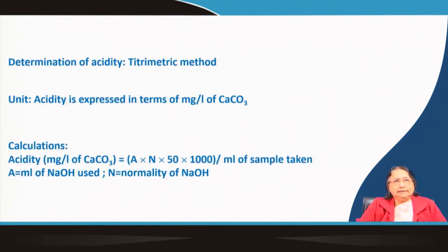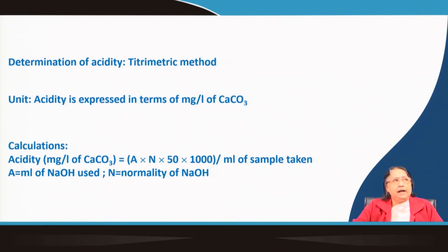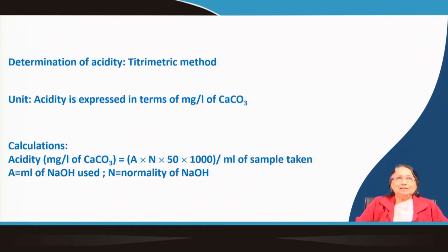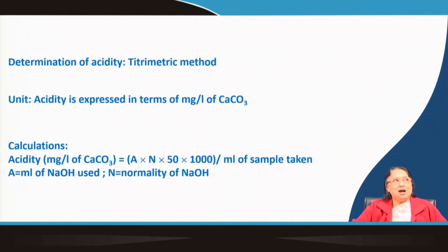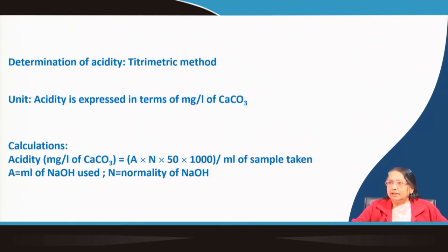For the determination of acidity we use a titrimetric method in the laboratory, using a burette and a proper choice of indicator. The knowledge of indicator selection from the previous lecture is applicable here. You have a sample containing some acidity and you need to determine how much is carbon dioxide acidity and how much is mineral acidity.